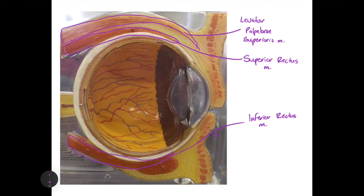There is a muscle belly located directly inferior to the inferior rectus muscle. It's somewhat unusual because it comes in from a different angle — originating from the medial aspect of the eye and inserting into the lateral side. This muscle, coursing transversely, is called the inferior oblique muscle.